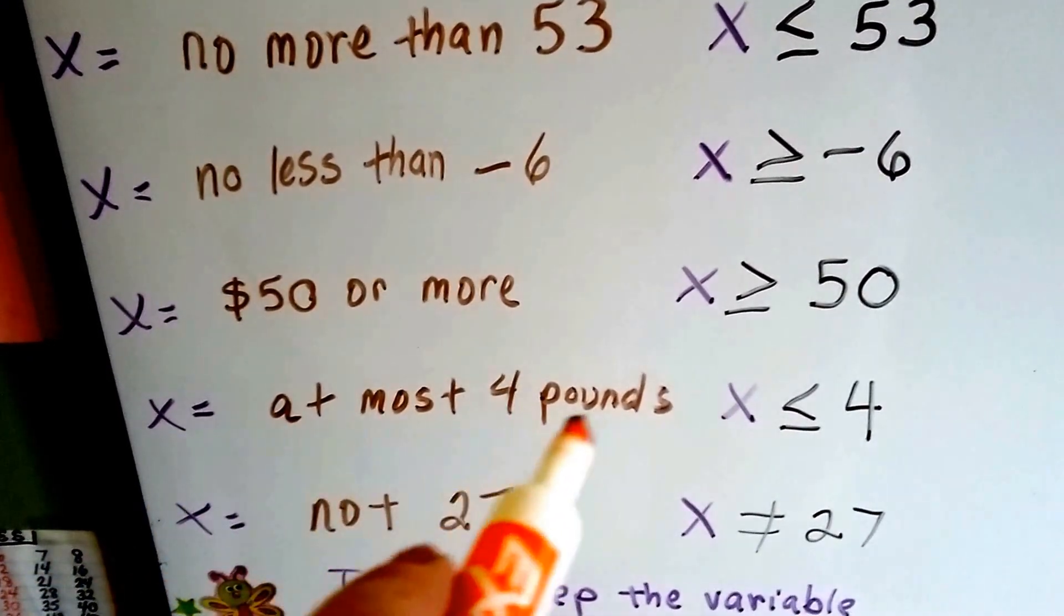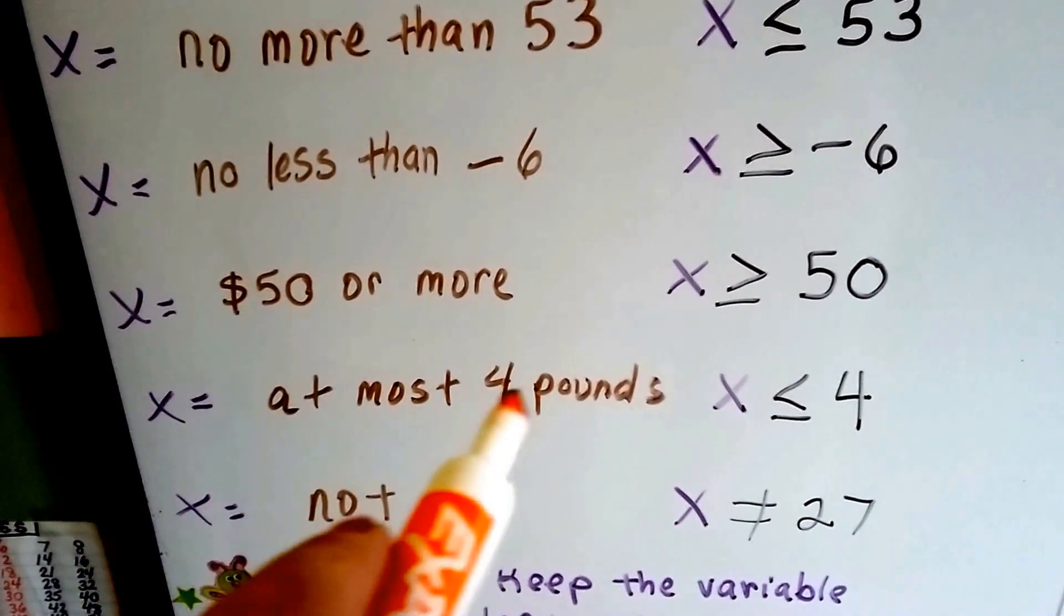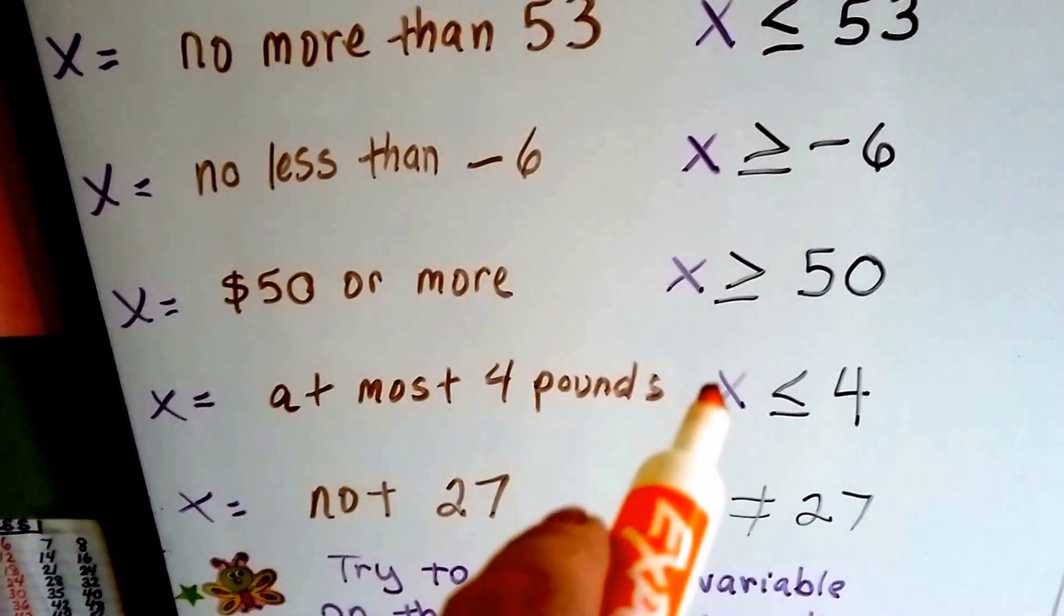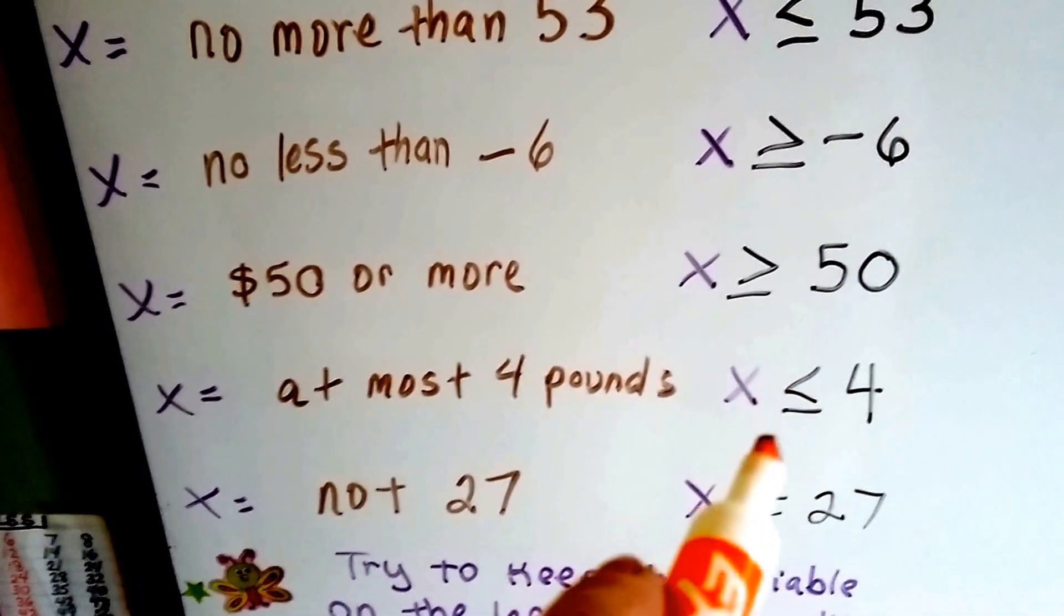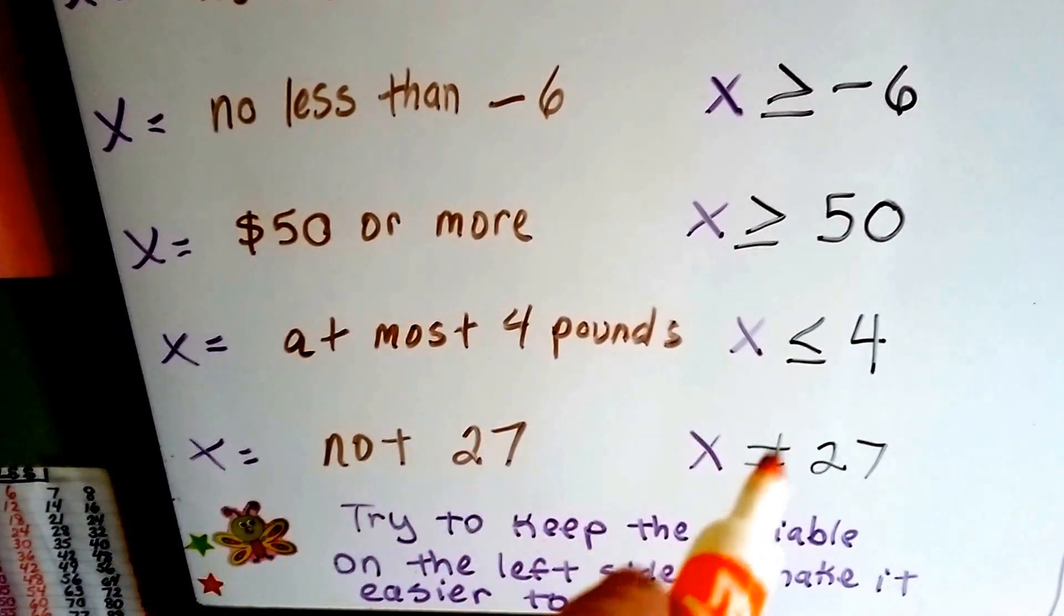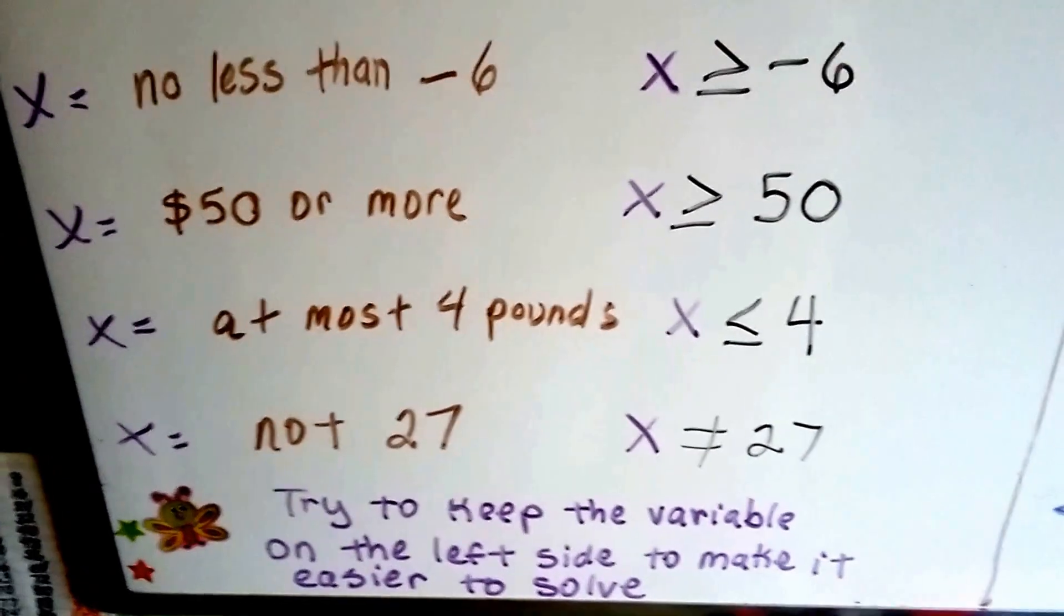If x is at most 4 pounds, then that's the largest it could be, the most it can be. So it could be 4 pounds or it could be less. x is less than or equal to 4. If x is not 27, then x is not equal to 27.